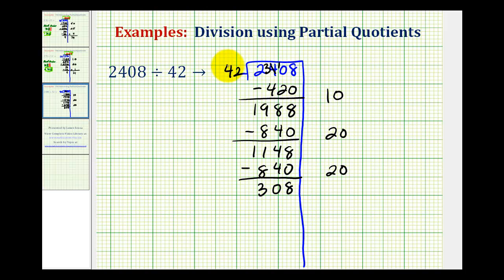Now we have 308. Remember, 10 times 42 is 420. Let's go ahead and use a partial quotient of 5. Well, 5 times 42 would be half of 10 times 42. So that would be 210. Now we have 98. And there are two 42's in 98. So our next partial quotient would be 2. 2 times 42 is 84. Our difference here, which would be our remainder, is 14.